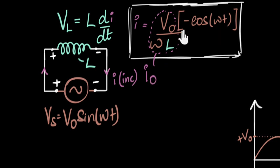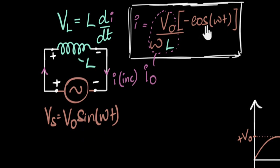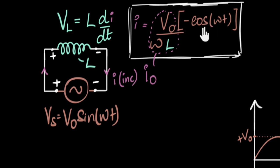But now let's concentrate on this part, because we want to compare these two expressions and draw a graph. What I want to do is convert this into a very similar function — converting it into sine — so that I can compare them easily. Now would be a great time to pause the video and use your trigonometry to see if you can convert negative cosine into positive sine.